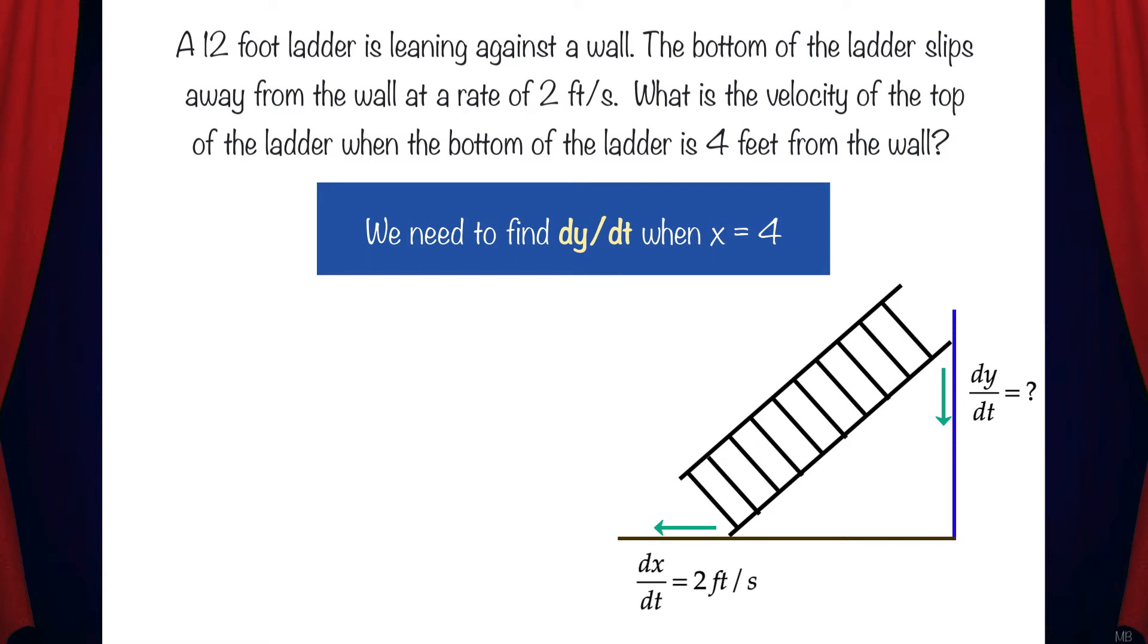Next, we need to come up with an equation that relates the variables. Here we can see that x, y, and 12 can be related together by the Pythagorean theorem. x squared plus y squared equals 12 squared.